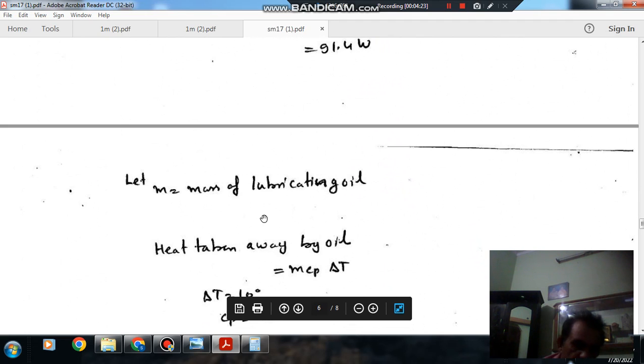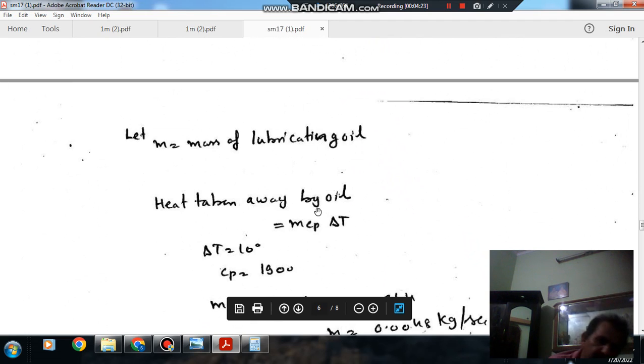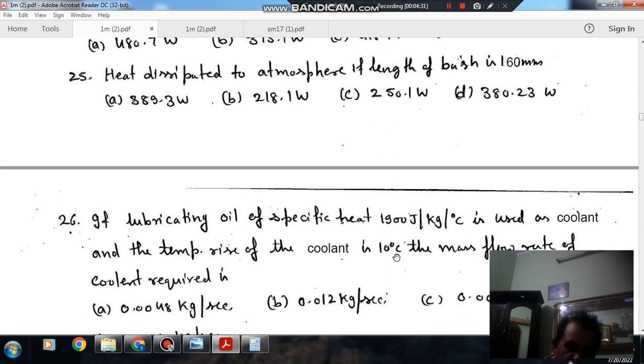The mass of the coolant or lubricating oil, then the heat taken by the oil is M into Cp into delta T. Heat carried by the coolant is 91.4 Watt, temperature rise of the coolant is 10 degrees, and Cp is here 1900.